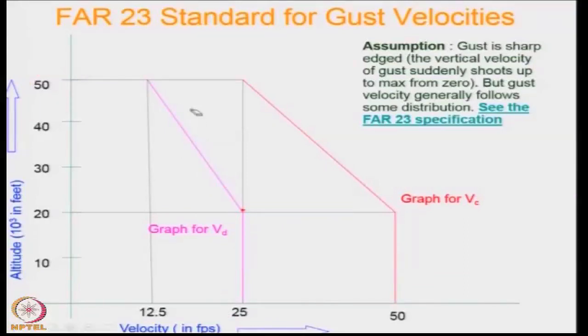But when you are flying the aircraft at the cruising speed, you are expected to encounter a larger value of gust velocity, the double of the previous values. Where it was 25 earlier at up to 20,000 feet, it is supposed to be 50 feet per second. And again, there is a linear reduction to 25 feet per second when you reach a height of 50,000 feet.